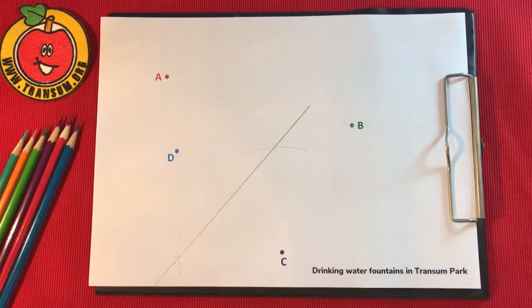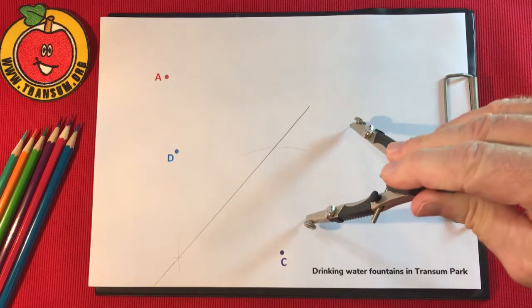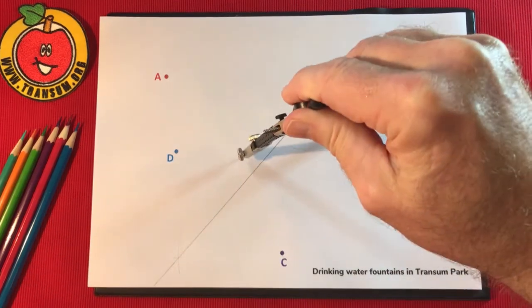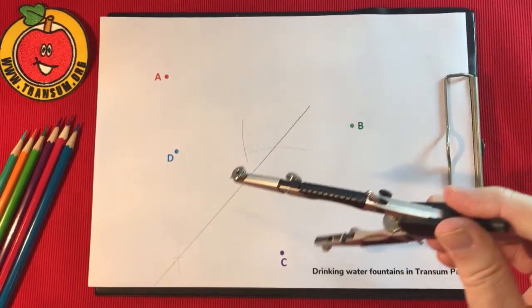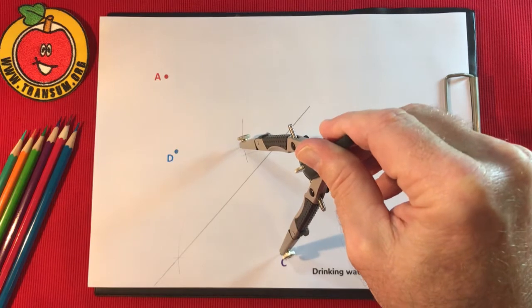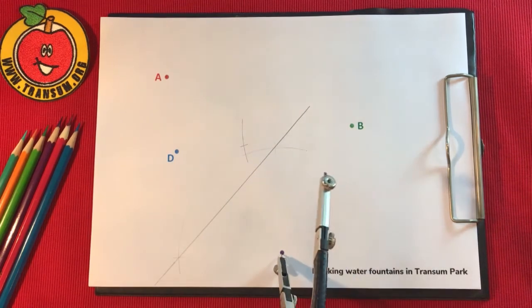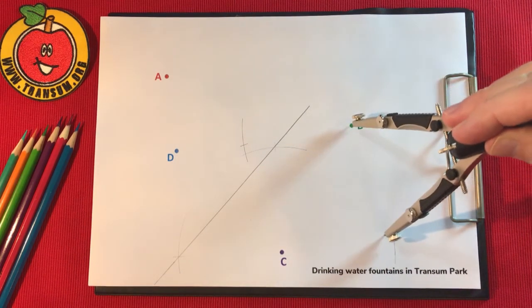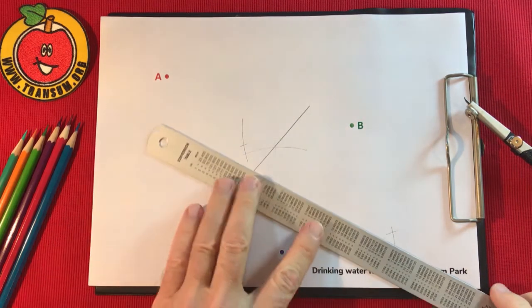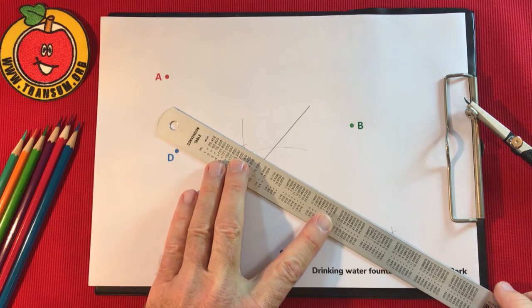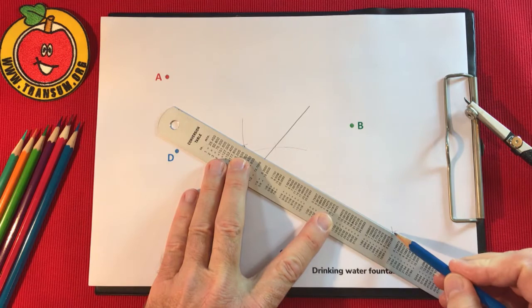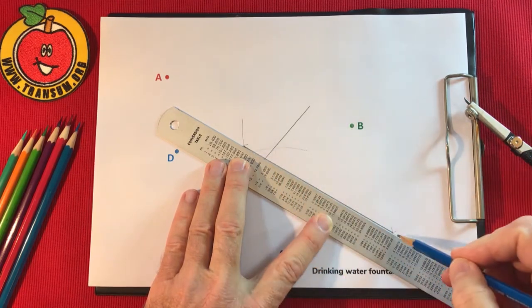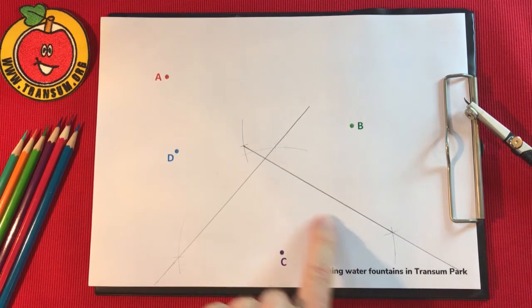So what about fountain B? Well we do the same thing, we draw the perpendicular bisector of the line CB. So I'll draw an arc up above, and this is where it can get a little bit confusing if you don't remember which arc was drawn for which two points. I'll join up the intersections, and I know that anywhere in this region then your closest water fountain will be C.